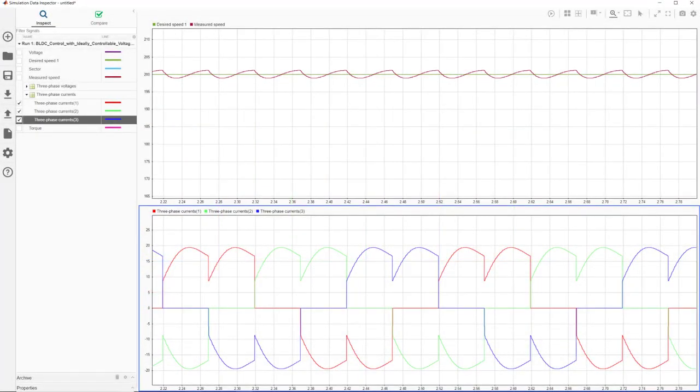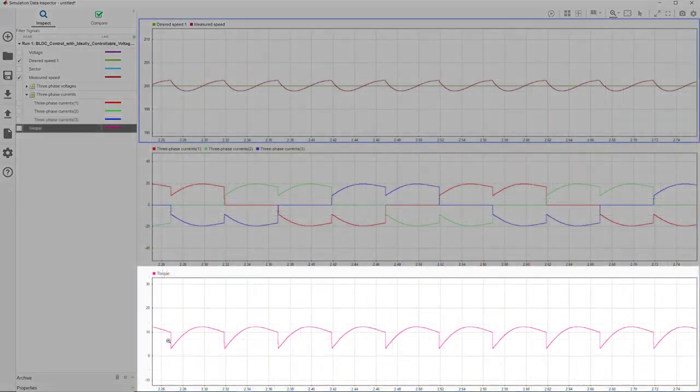Looking at the three phase currents, we see how they rise over time, which in turn leads to ripples in the speed. And speed is not the only affected signal, but we observe ripples in the torque response as well, as current and torque are proportionally related. The ripples in the torque response are considered one of the drawbacks with trapezoidal control of BLDC motors.